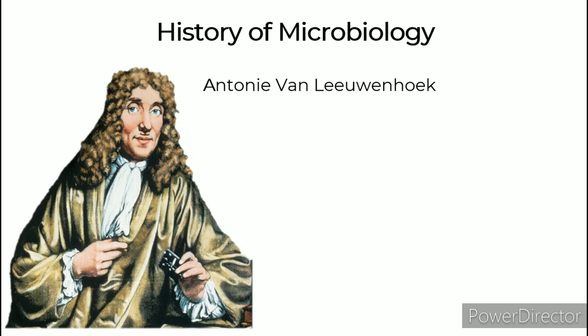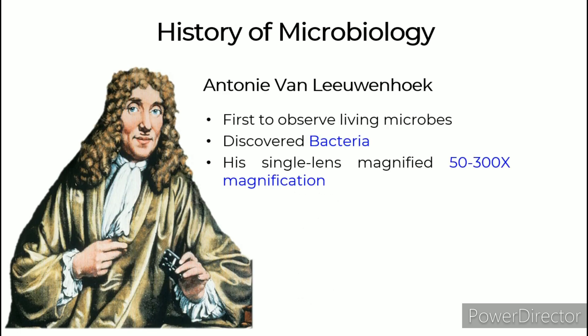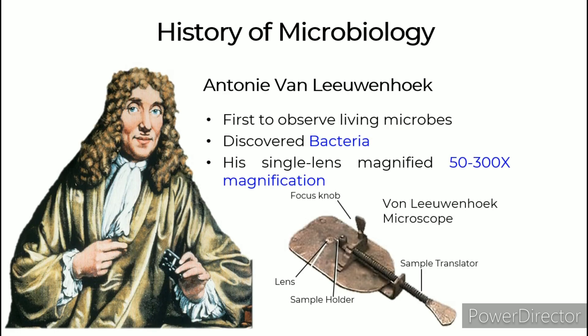Antony van Leeuwenhoek, the first person to observe and describe microorganisms, is often referred to as the father of microbiology. He was the first to observe living microbes. His single lens achieved 50–300x magnification. Between 1674 and 1723, he wrote a series of papers describing his observations on bacteria, algae, protozoa, and fungi.